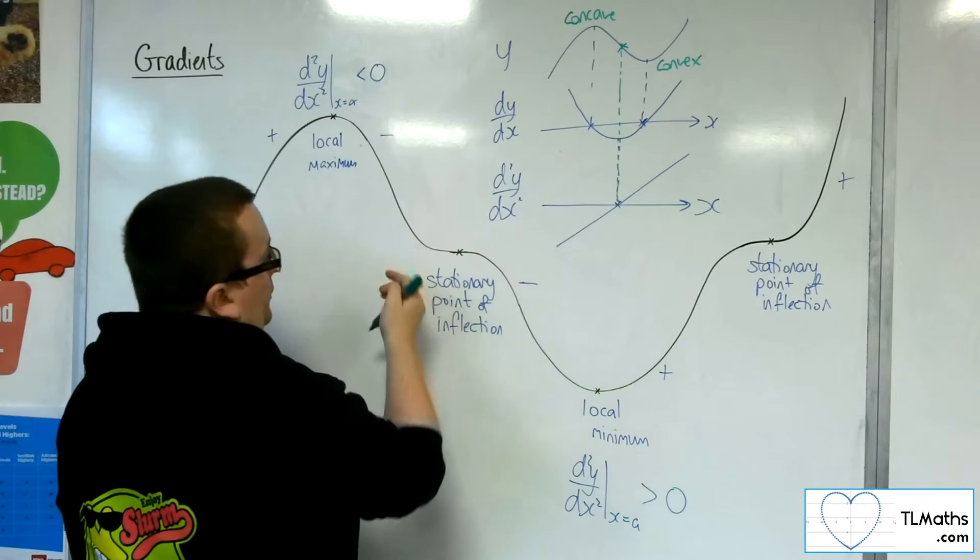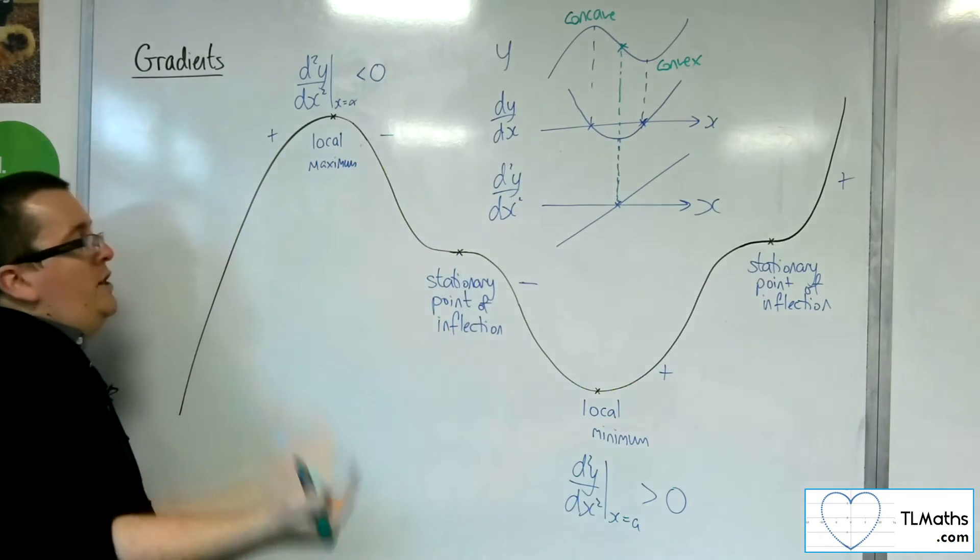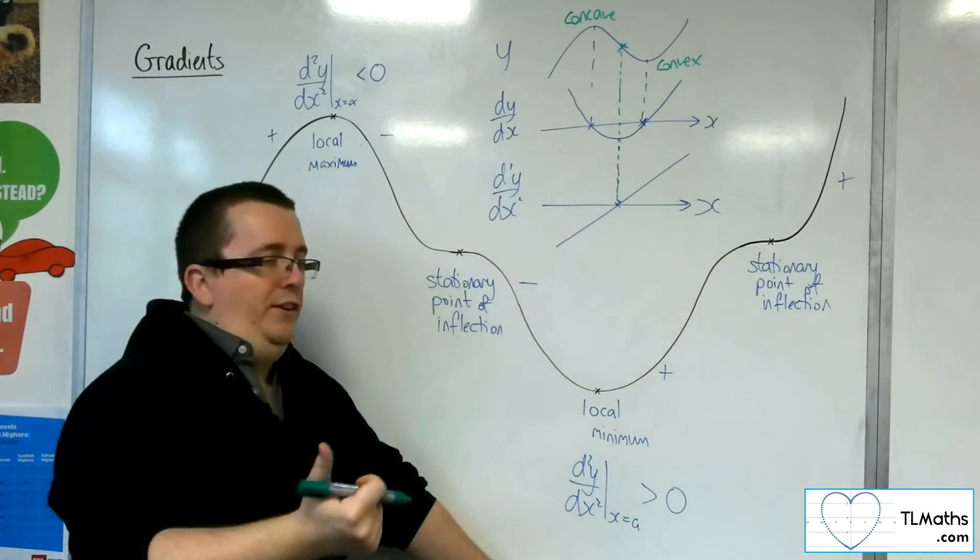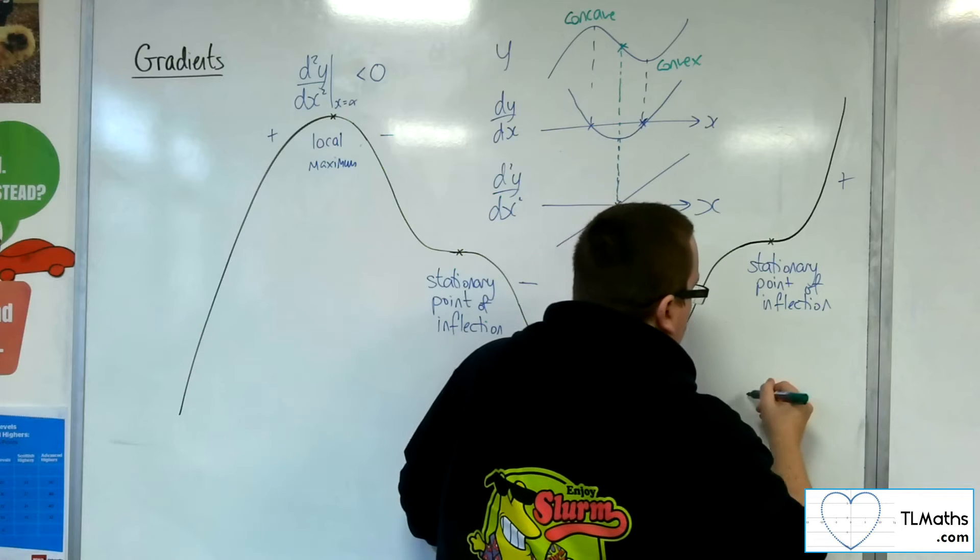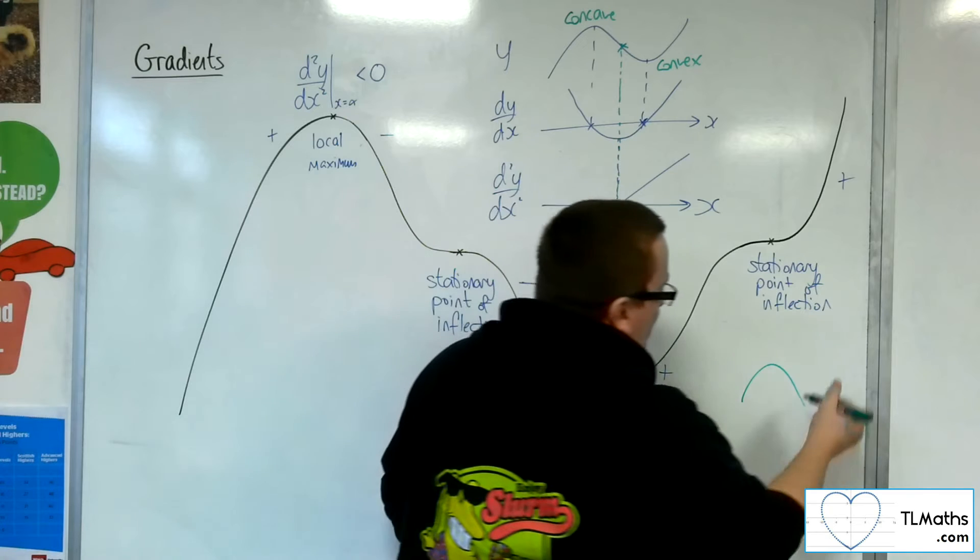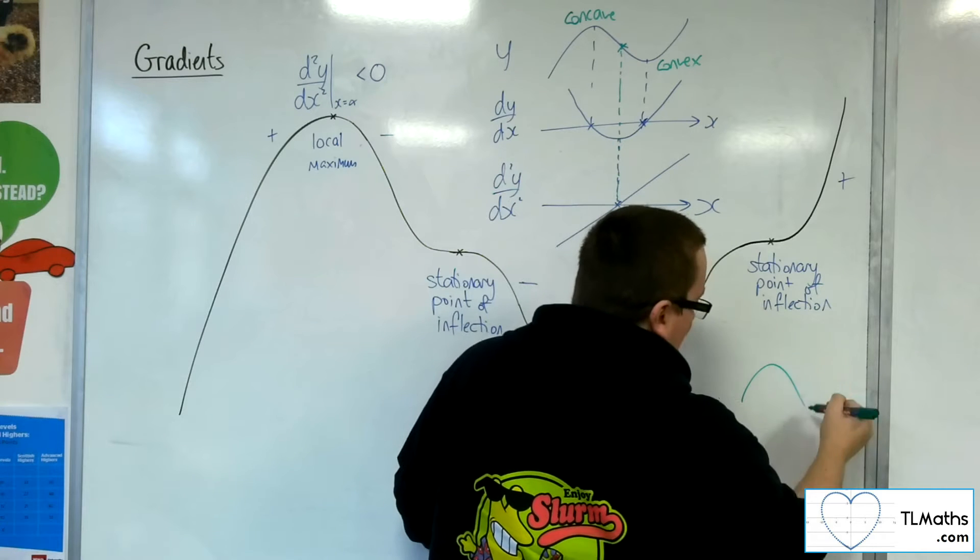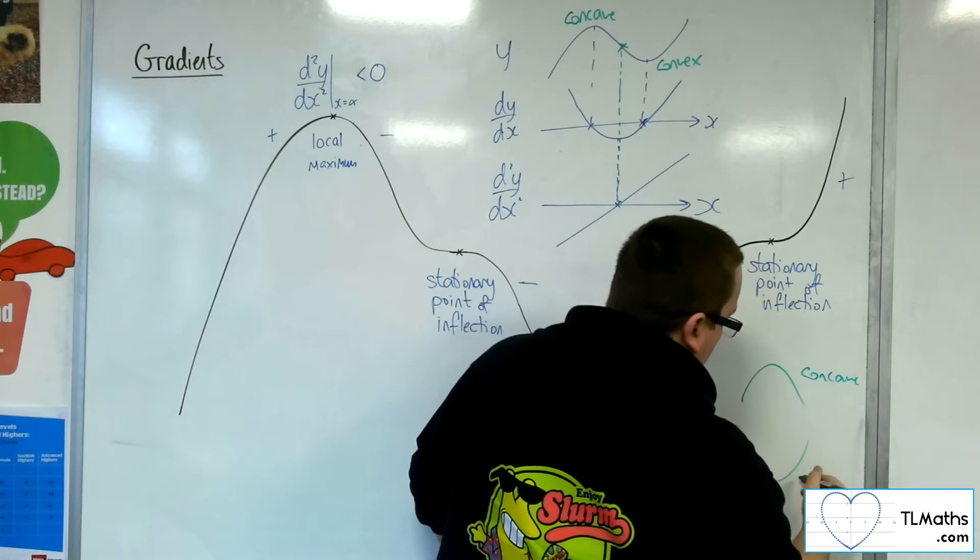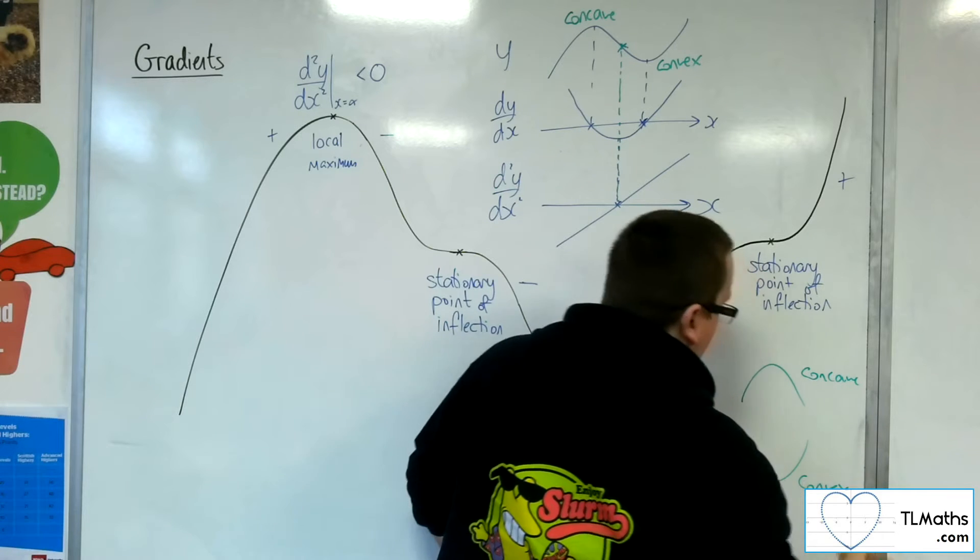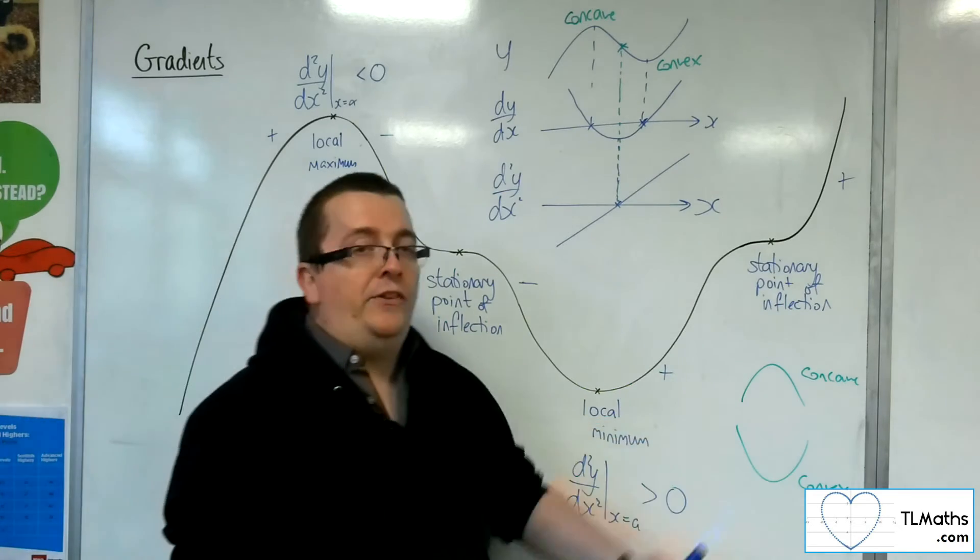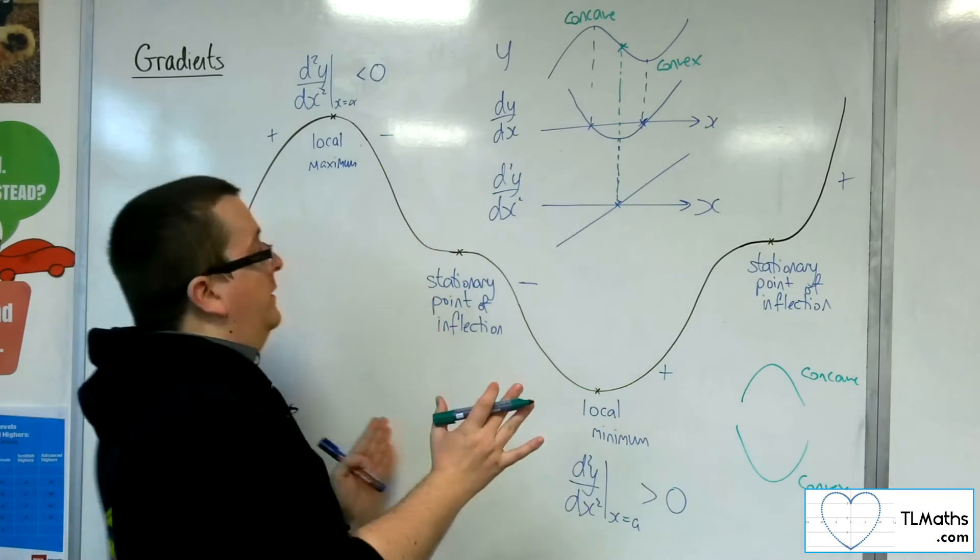Because, well, the way to remember it, which is very easy to forget, the way to remember it is that concave looks like a cave, right? So, it looks like you're going into a cave. That's concave. And convex looks like that, is the other way up. So, I kind of think, like, convex is like a satellite dish pointing off into the sky.